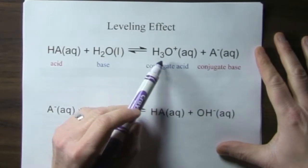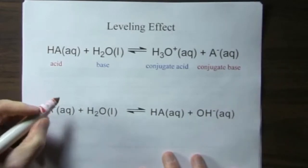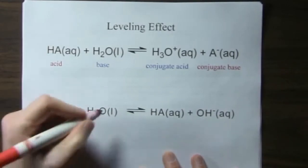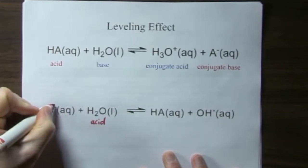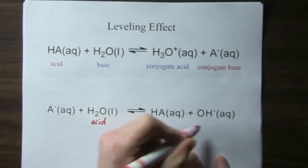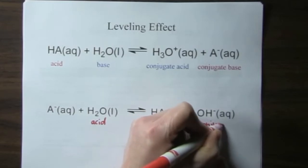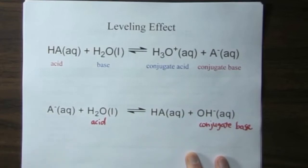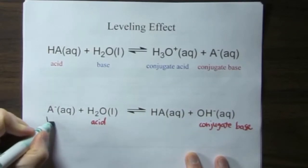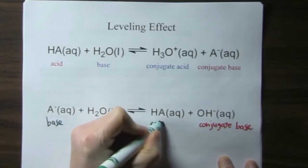Hydronium ion is an acid, it could donate a proton based on the Bronsted-Lowry definition. If we put a base in water, the water now will act as an acid because it can donate a proton to the base. So this is the conjugate base.